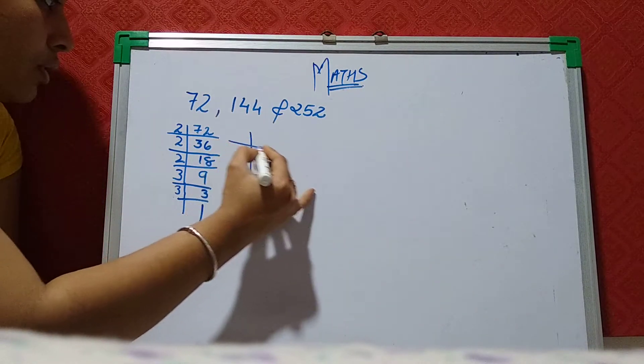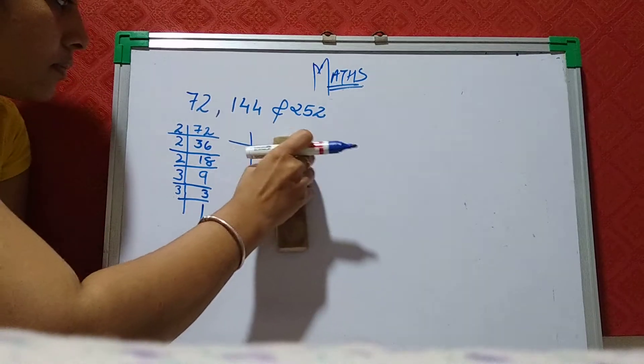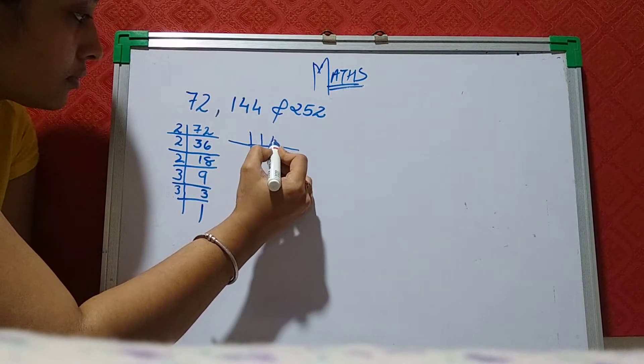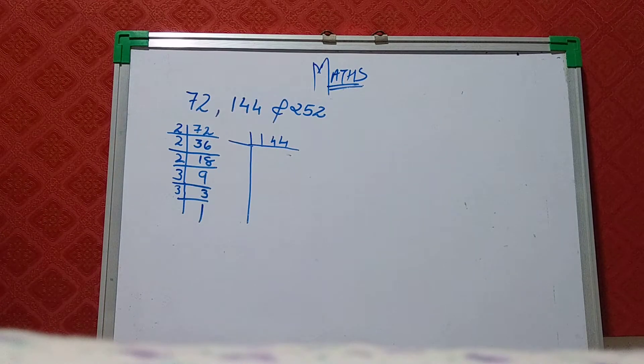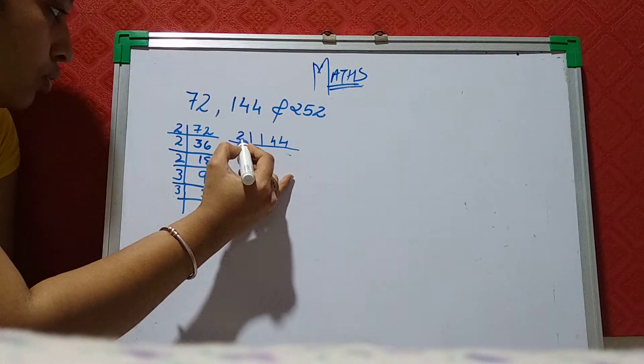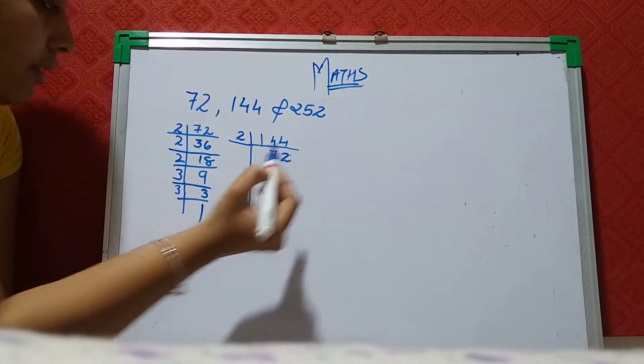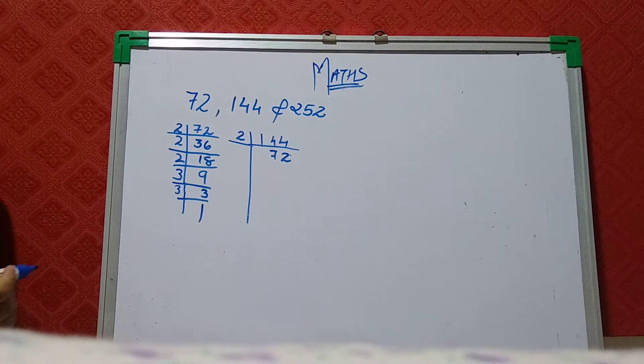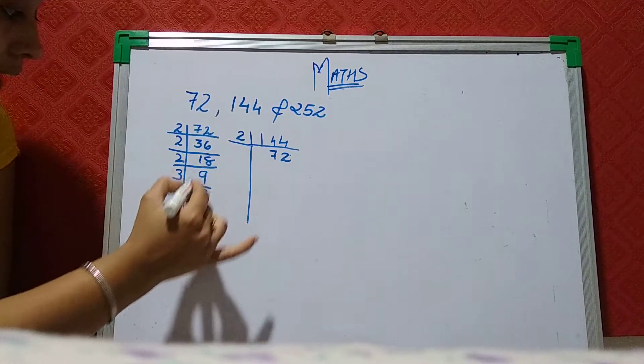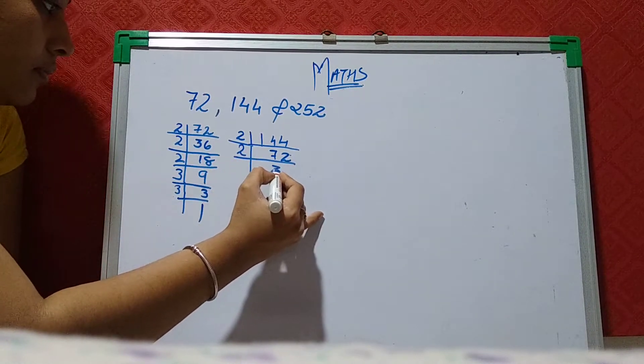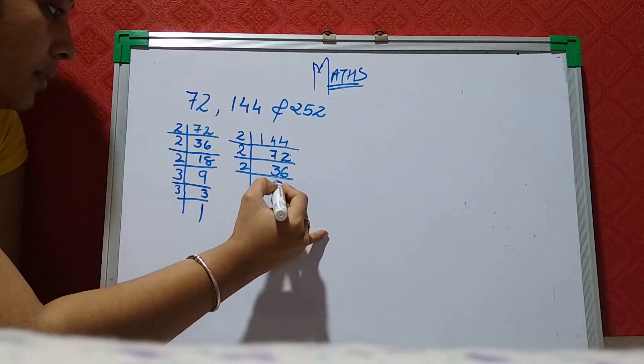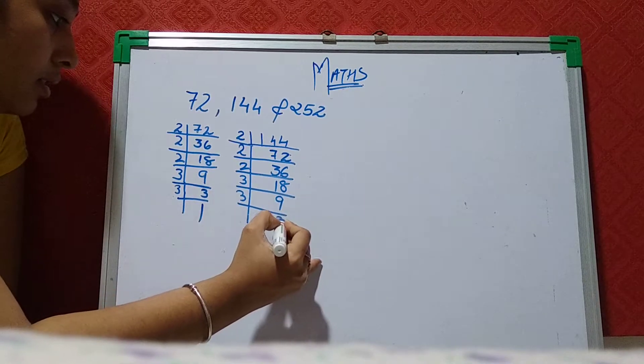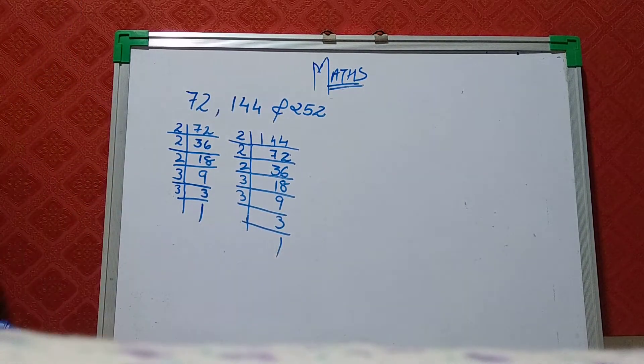Next is 144. 144 we can check in the table of 2. 2, 72s are 144. For 72 we can take the table of 2. 2, 36s are 72. Repeats the same: 18, 9, 3 and 1.